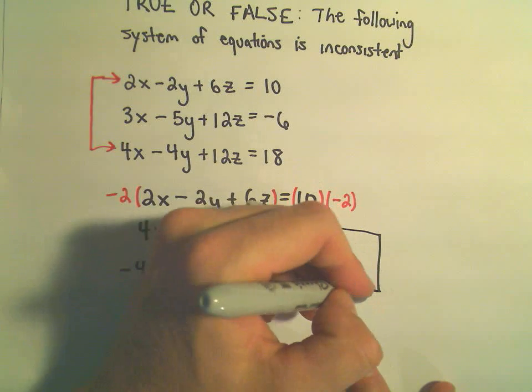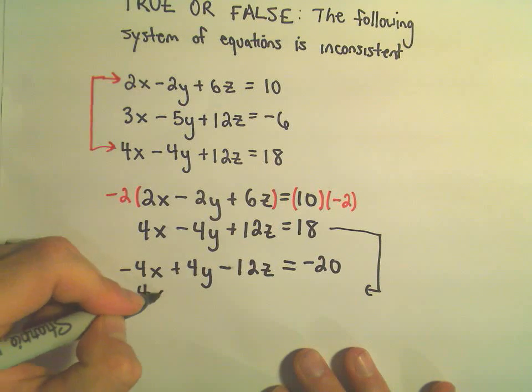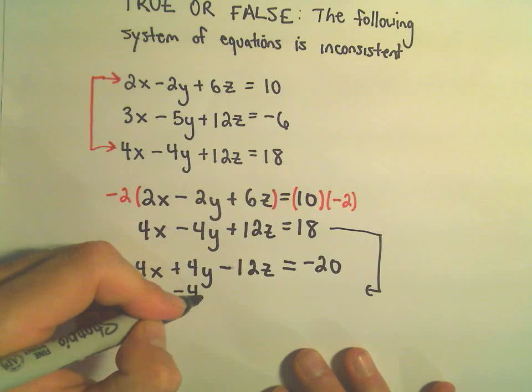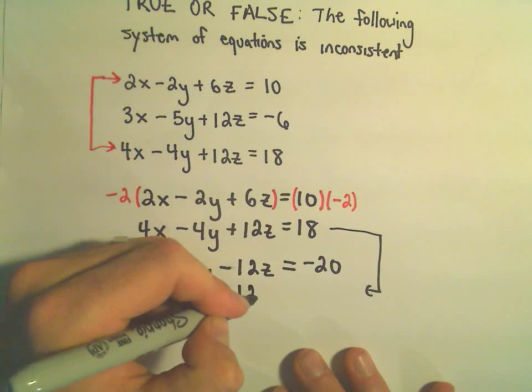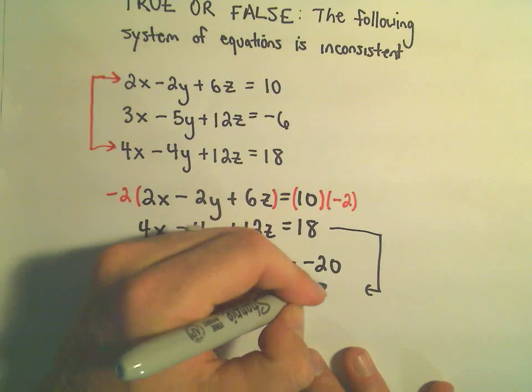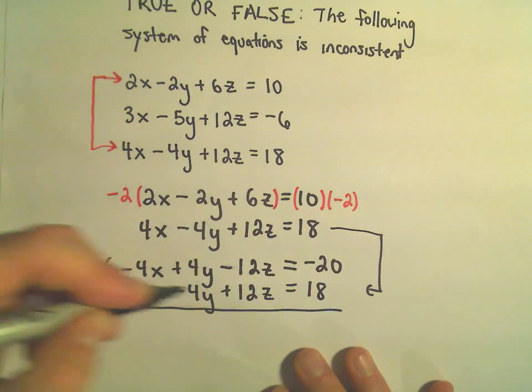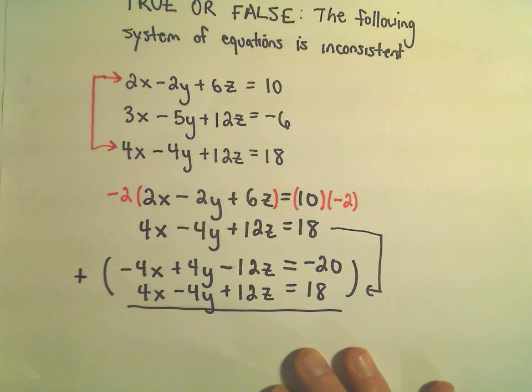If we take our original second equation, we've got 4x minus 4y plus 12z equals 18. And notice if we now do our elimination by addition, if we add those together,